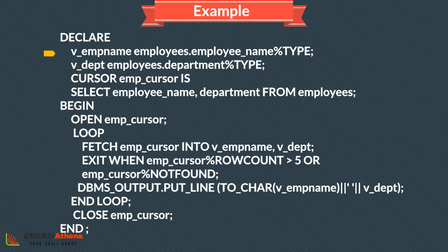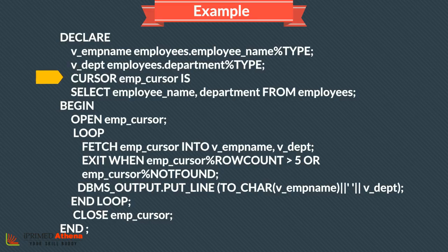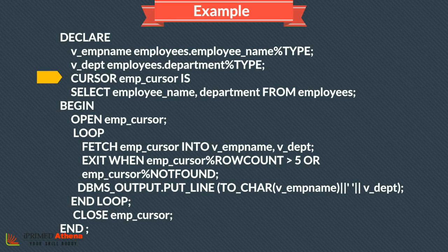We begin by declaring two variables for the cursor — one for employee name type and one for department type. We then create a cursor named dmpCursor to hold employee names and department from the Employees table.